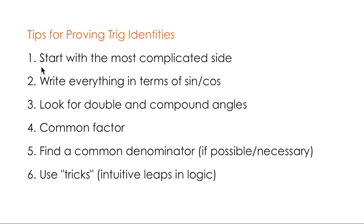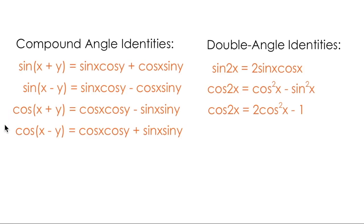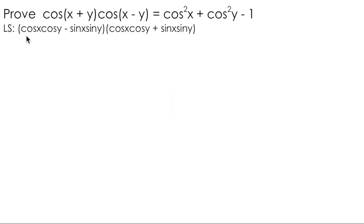Remember that the first tip I provided you with was to start with the most complicated side. In this example, I'm leaning towards the left side because my keen mathematical intuition is telling me to look at the two compound angle formulas involved. So I'm going to start with the left-hand side and I'm going to take cos of x plus y and cos of x minus y and replace them with this stuff. So you can see I've done that here. I've used my compound angle identities on the left-hand side and I've produced the product of two binomials.